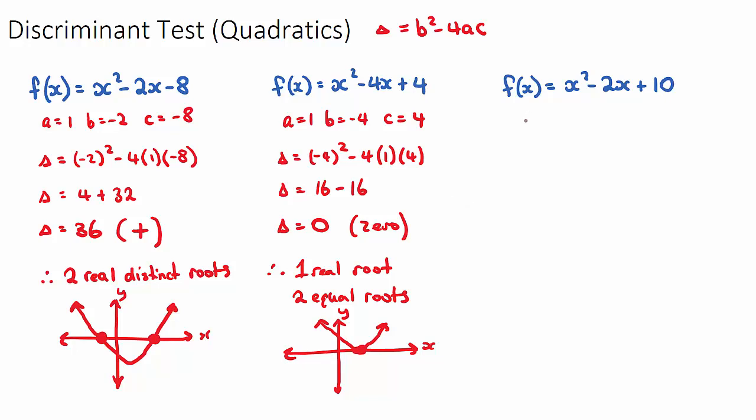The last one, if we do the discriminant, a is 1, b is negative 2, and c is 10. Our discriminant will be b squared minus 4ac. So our discriminant will be 4 minus 40, which equals negative 36.